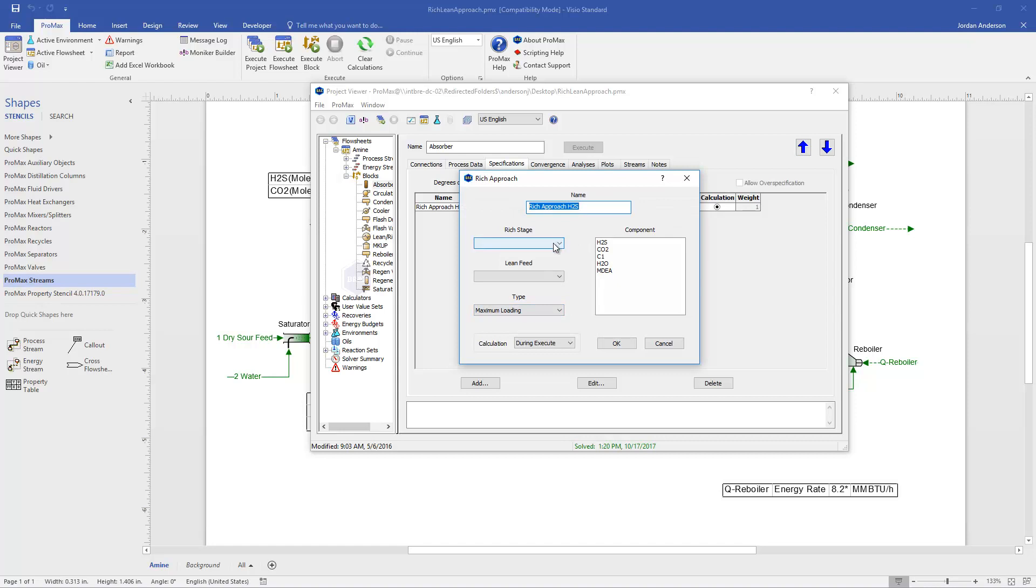This window is going to ask me which stage is the rich stage we're looking at, which will be the bottom stage. It also wants to know where the lean feed is coming from, so our amine stream is stream 19. And then this is a maximum loading calculation or seeing how close we are to our maximum loading. The component we have chosen is H2S and so I will choose that and click OK.